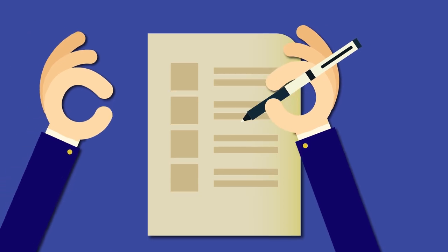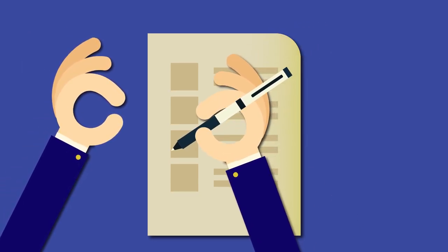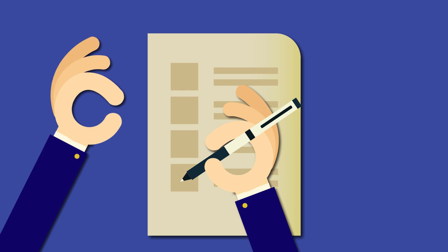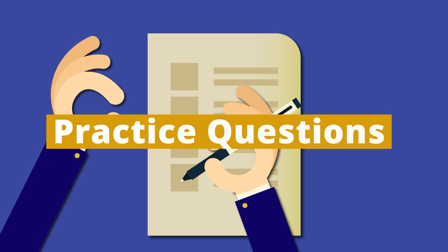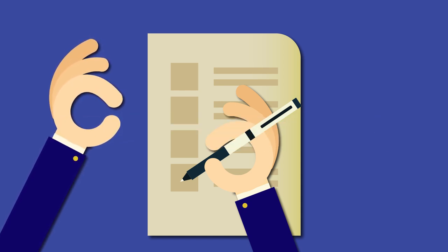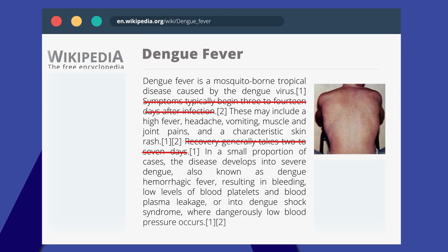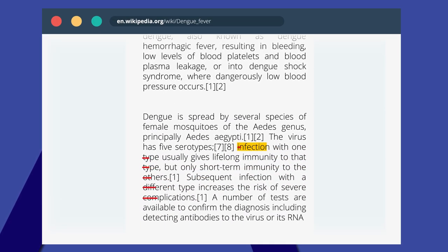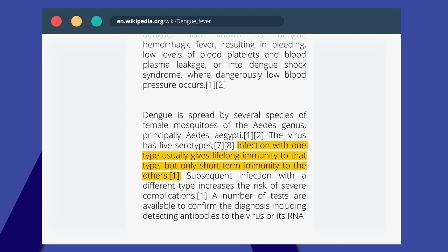You should include all potential high-yield facts, but there's still a chance you could miss a few — that's why you need to do practice questions. In my case, I missed one important point about dengue fever: examiners love to test knowledge regarding the correlation between serotypes and the resulting immunity. By doing practice questions, I was able to reinforce what I missed.